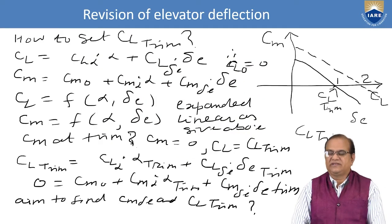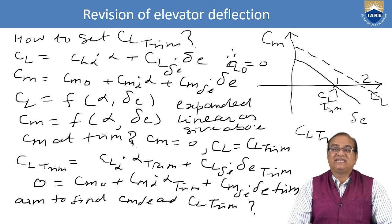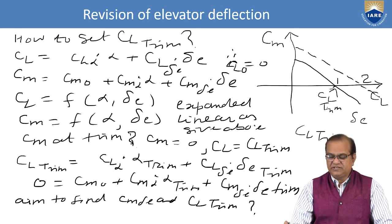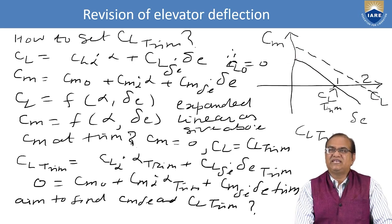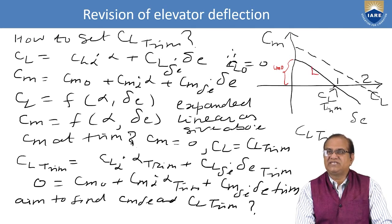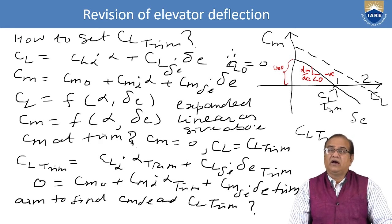Now for this revision: how to get CL_trim. It is very important to understand that getting CL_trim is crucial. Looking at the Cm versus CL plot, initially at CL = 0.1 the aircraft is trimmed. We have positive Cm_naught and dCm/dCL less than zero — this plot meets our requirements.